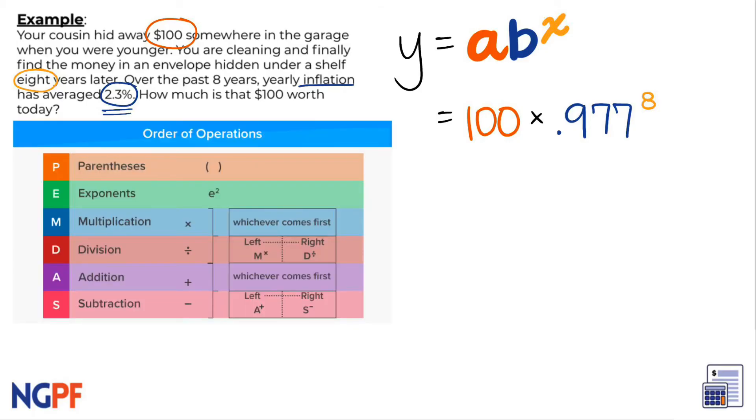According to order of operations, we must first carry out the exponent, so we can just drop and keep the 100 for now. .977 raised to the 8th power is equal to .830149881.